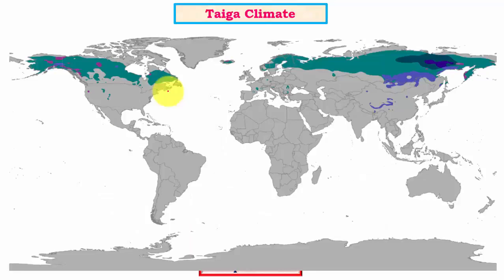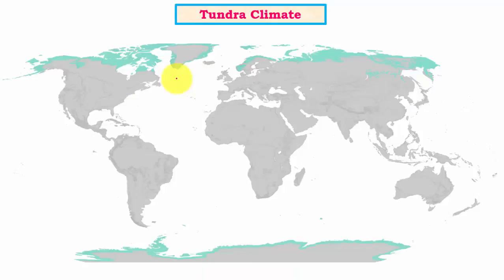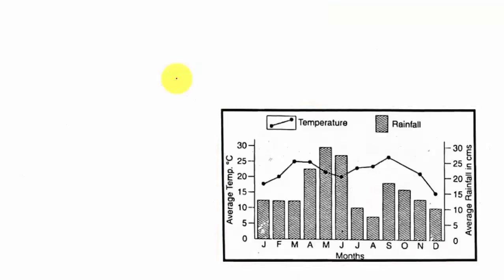Taiga type of climate has dense coniferous forests and includes a huge stretch of landmass in Russia and Canada. Tundra type has extreme cold climatic regions and borders the taiga type. Now let us look at a few questions based on our understanding of climatic regions.